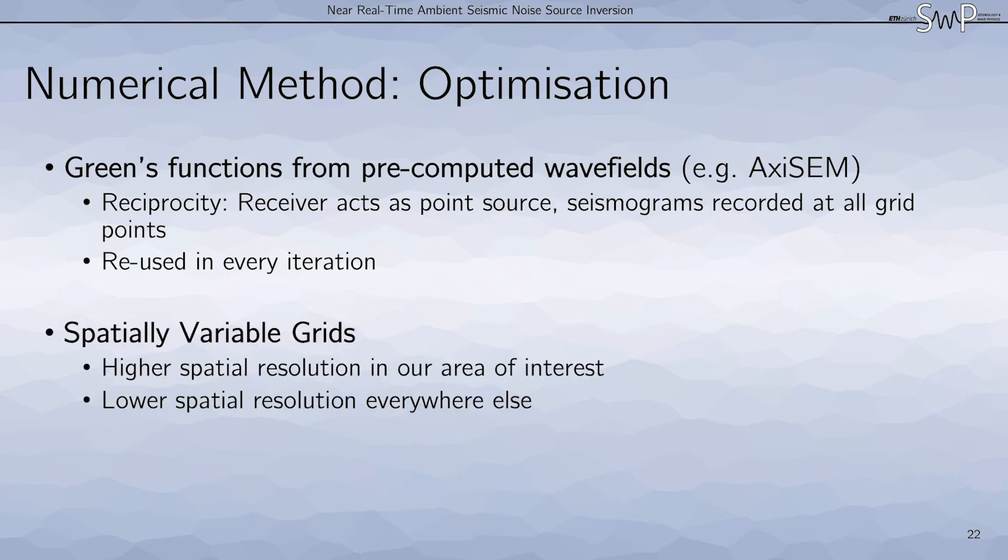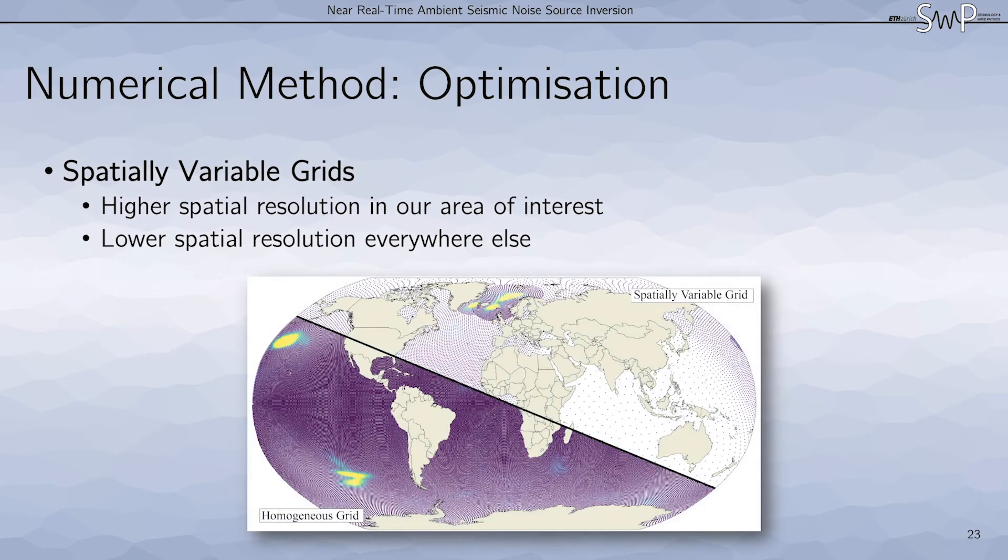Secondly, to optimize the parameterization of the power spectral density of the noise source distribution, we use spatially variable grids. That means we create a grid that has a higher spatial resolution in our area of interest and a lower spatial resolution everywhere else. One example of that can be seen here.